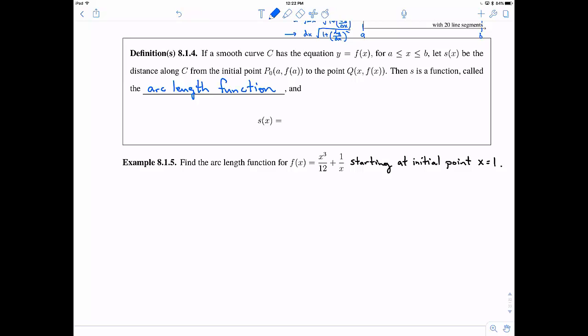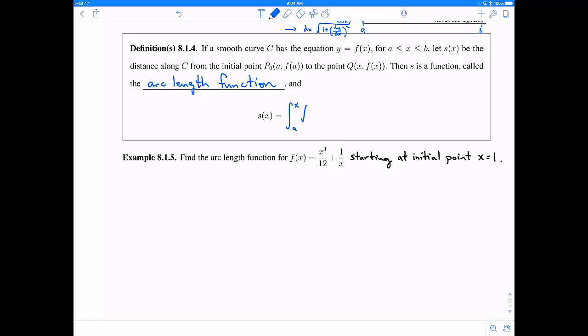It's not just arc length but it's arc length function. We're defining this by s of x as the integral from a to x where x is a variable. Then everything else is the same: the square root of one plus the derivative quantity squared. Notice we're using t's instead of x's just so that we don't double use a variable name here.